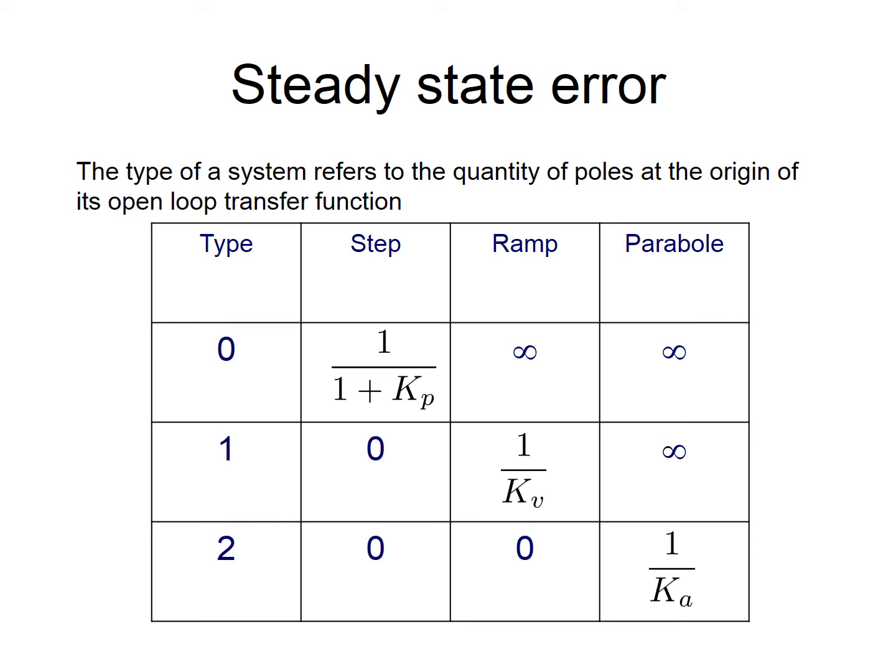Now let us make a brief summary of what we have said. First of all, let us define the type of a system. The term 'type' refers to the quantity of poles at the origin of the open-loop transfer function. The error coefficients and the steady-state error depend on the reference we are considering, but also on the number of poles in the open-loop transfer function. Let us make a table.